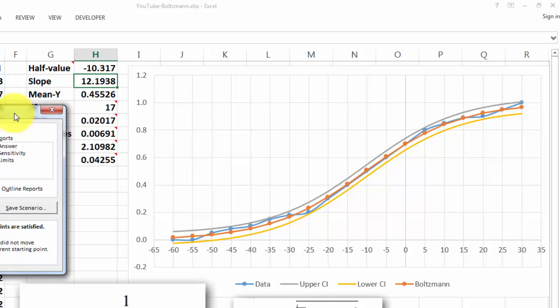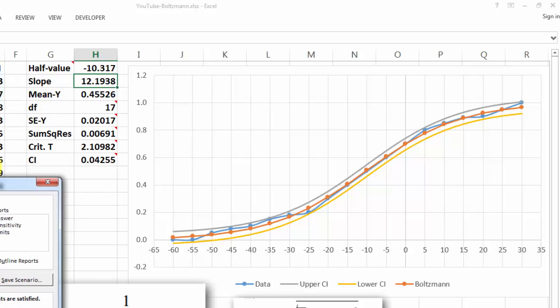And you will see that it came up with a much better fit, a half value of minus 10 and a slope of 12.19. And the blue curve is what we observed. And the other curve is what we calculated. And the range for them is we have a 95% confidence that the predicted value will lie within that range. So we have a pretty good fit here. And you will see in this case that the sum of squared residuals is almost zero.